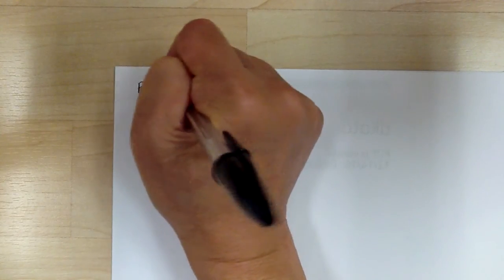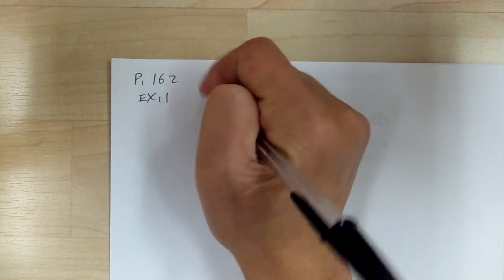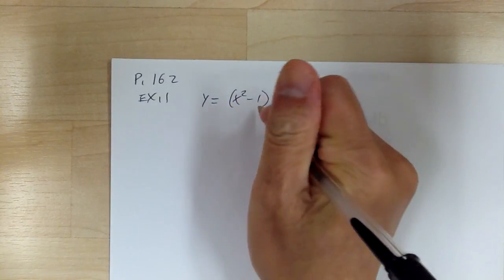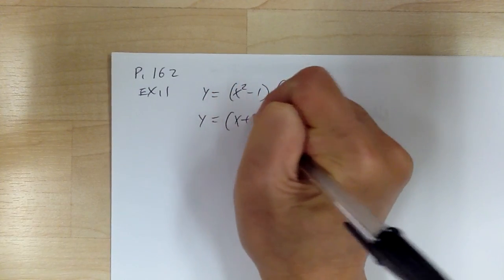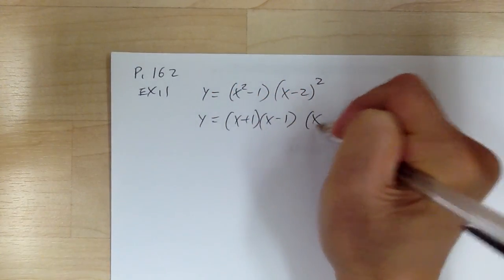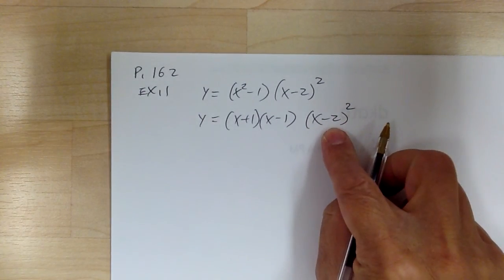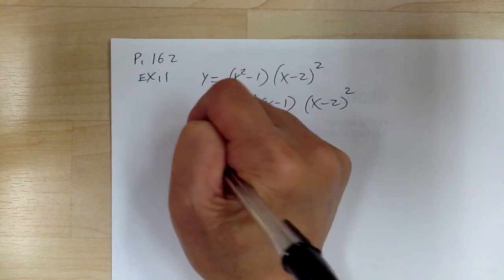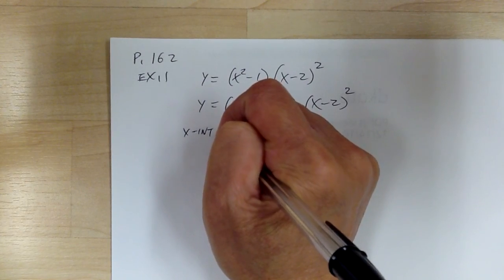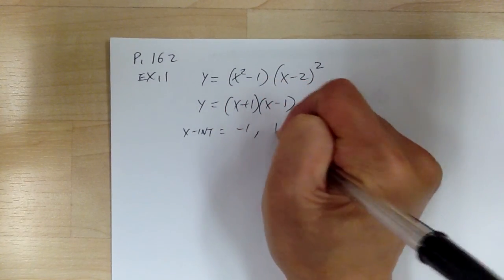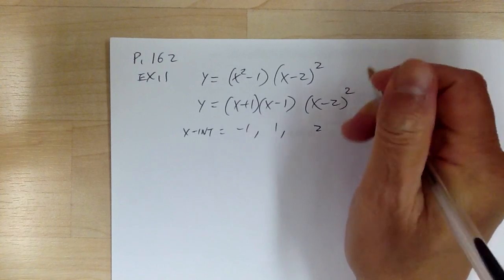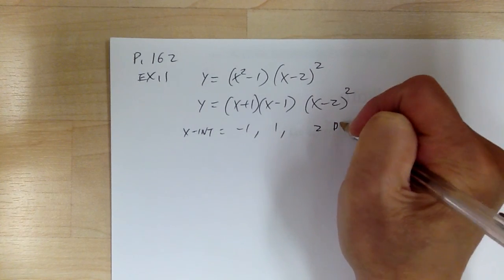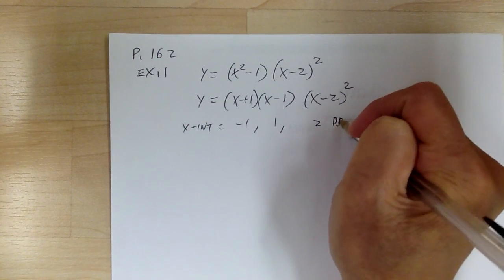Now let's go to example 1. You have y = (x² - 1)(x - 2)², which factors as (x + 1)(x - 1)(x - 2)². Notice that (x - 2)² is a double root, so you have to watch for that. Your x-intercepts are -1, 1, and 2 — where 2 is the double root.